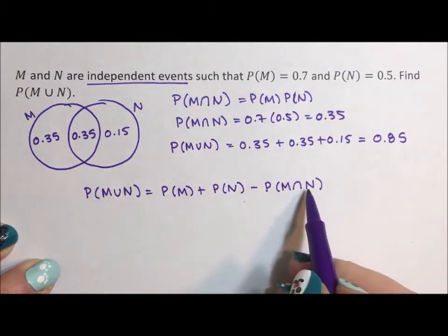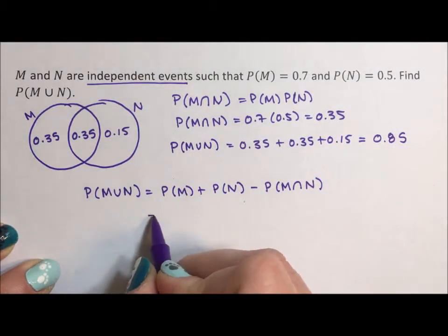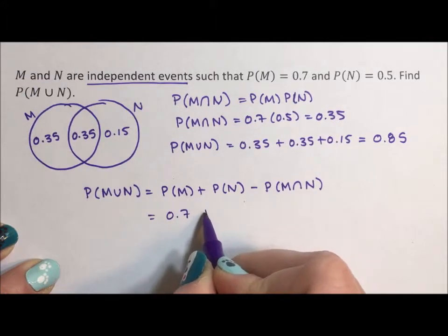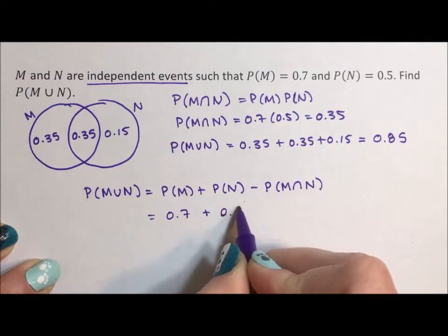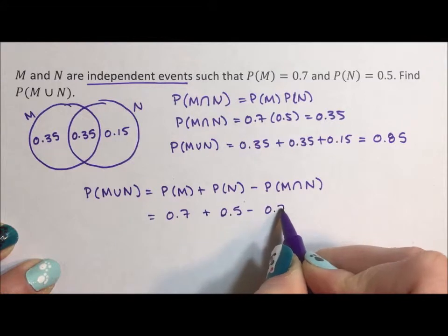And so if you know the formula, you can skip all of this by just saying 0.7 plus 0.5 minus 0.7 times 0.5.